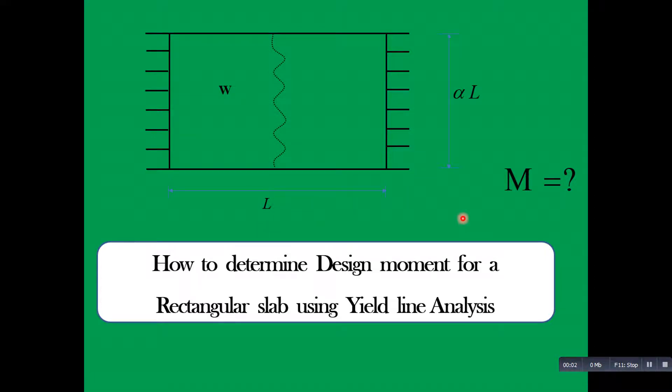Hello guys, today's video will be based on yield line analysis for slabs. For this particular problem we'll use yield line analysis to determine the design moment for a rectangular slab. Suppose you have a rectangular slab subjected to a uniformly distributed load W. It is simply supported on two parallel sides and the remaining sides are free.